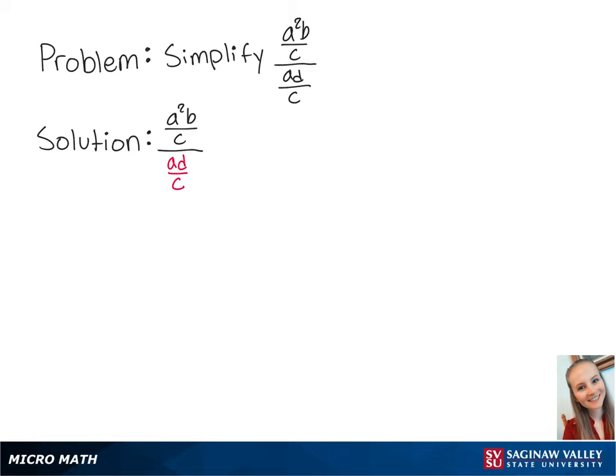For this problem, we're going to simplify a squared b over c divided by ad over c.